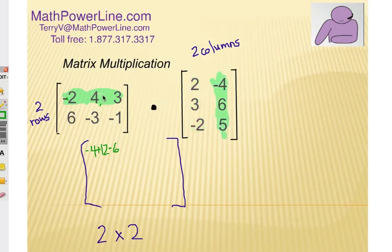We're going to look at this first row again and compare it to the second column. So now it's negative 2 times negative 4, that's positive 8. And it's 4 times 6, which is 24. And 3 times 5, which is 15. We'll add all those up in just a minute.